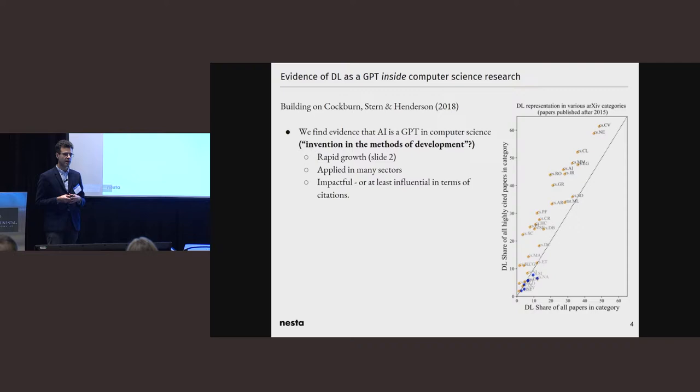So what do we find? First question was, do we find evidence of deep learning behaving as a GPT inside of computer science research? This is building on the work presented here a couple of years ago. We find evidence that AI is a GPT in computer science, somewhat like an invention in the methods of development. We have three tests for this. The first one is, is it experiencing rapid growth in activity, both in absolute and relative terms? We find that 77% of the deep learning papers in Archive were published in the last five years, which is a much faster rate than what we see in other domains of computer science.